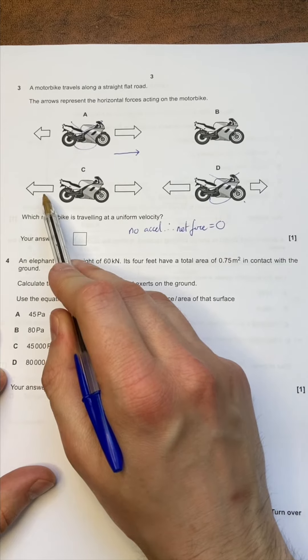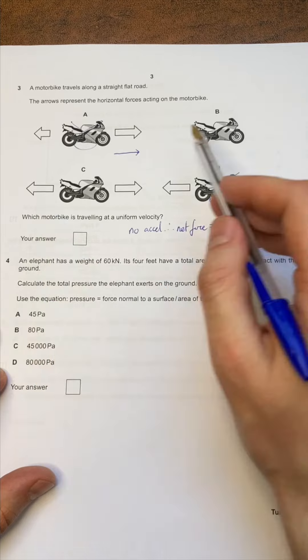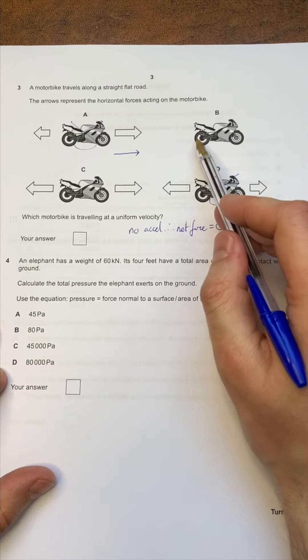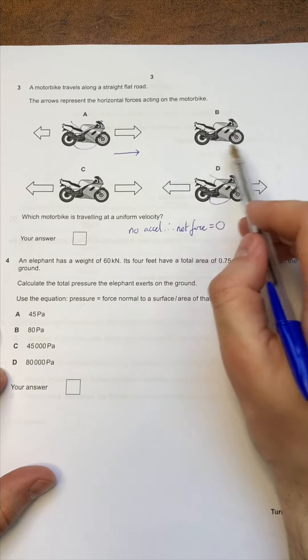So notice how in C we've got a force acting against the motorbike, which will cover the friction and the air resistance, but in B there isn't a resistive force. So this motorbike probably isn't trying to travel through air and against the friction of the road.